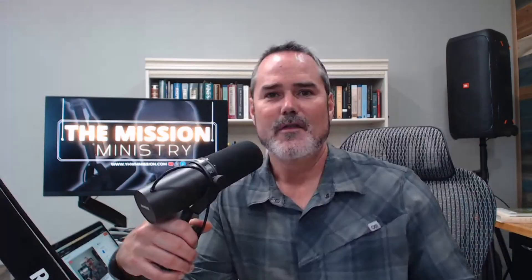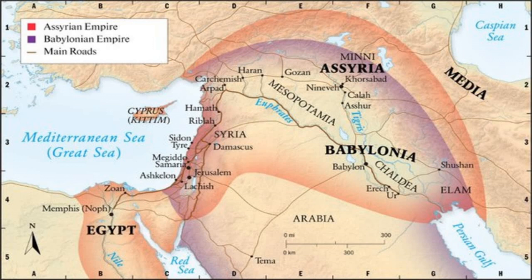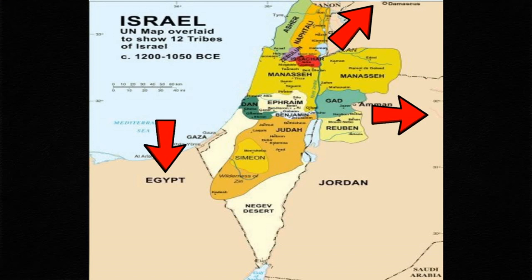The second river is the Gihon. It is the one that flowed around the whole land of Cush. Now there's so many arguments on this particular one because which land of Cush is being referred to, and the simplicity of it you're supposed to see is that this river went out to water the land of Israel. The third river is the Tigris, which flows east of Assyria, and the fourth river is the Euphrates. One went out to water Assyria, and the other one out to water the land of Babylon.